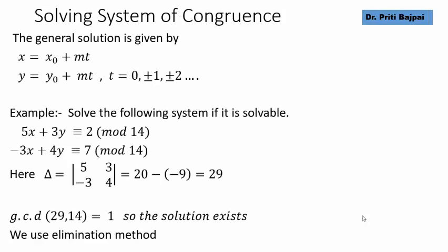Now we are given two congruence. You can see here 5x plus 3y is congruent to 2 mod 14 and minus 3x plus 4y is congruent to 7 mod 14.